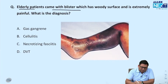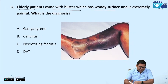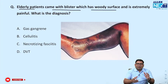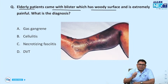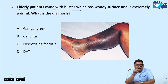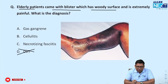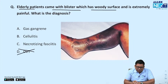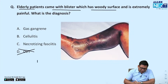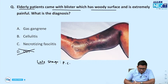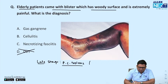A patient presents with blisters, a woody surface, and extreme pain. This looks classical for a differential diagnosis, but it cannot be DVT because DVT does not generally present this way — blisters are not typical. In late stages, when we talk about phlegmasia cerulea dolens, the patient may develop gangrene.